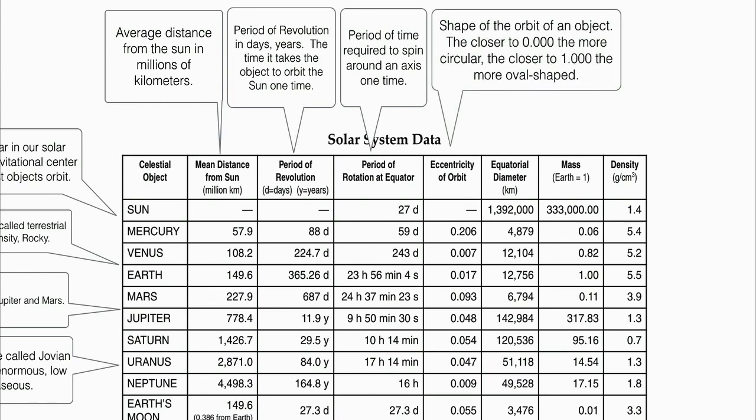Our next column is eccentricity, which describes how oval-shaped the orbit is. The closer the value is to one, the more of an ellipse it is. The closer it is to zero, the closer to a circle it is. All of the eccentricities are measured to the nearest thousandth, and there are no units.